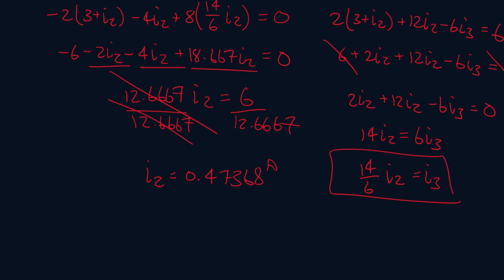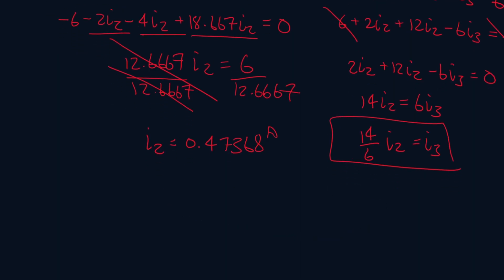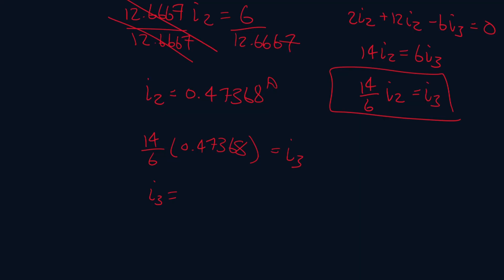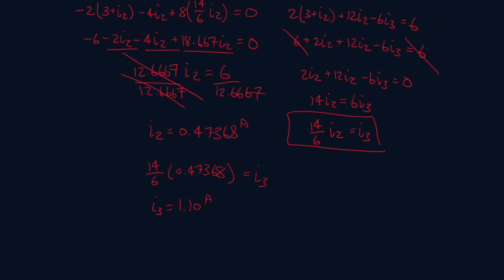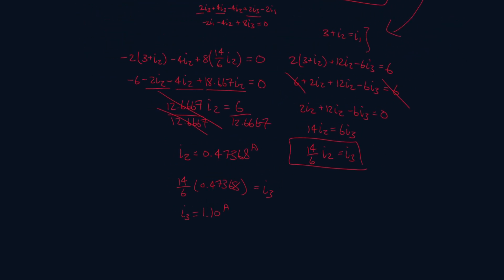Now we can use that to solve for the other unknowns. Plugging into I3: 14 over 6 times 0.47368 gives us I3 equal to 1.10 amps. And for I1: it's 3 plus I2, so I1 equals 3.47368 amps. So these are your final answers.